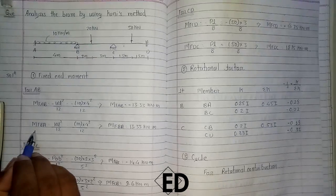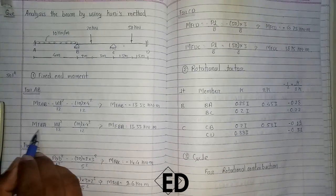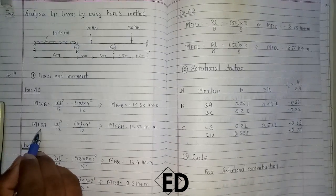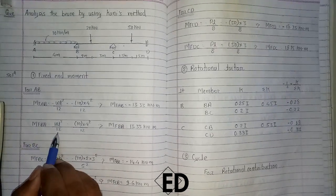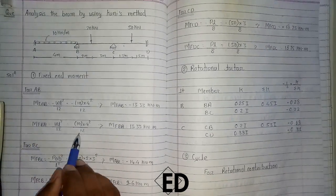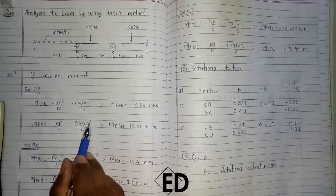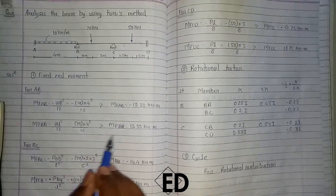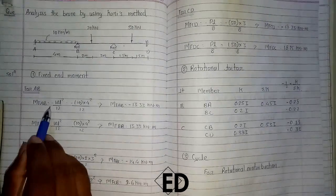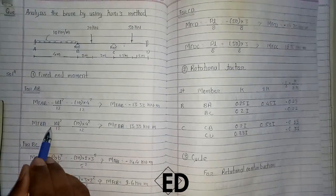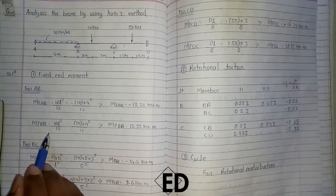For the fixed end moment from B to A, that is MFBA = WL²/12, that is 10 into 4² by 12, which equals 13.33 kNm. Here there is a negative sign for MFAB and a positive sign for MFBA.